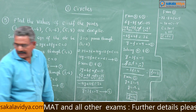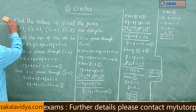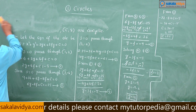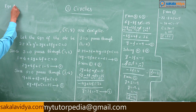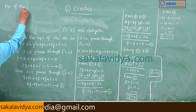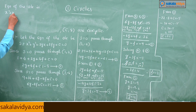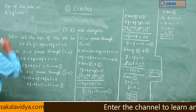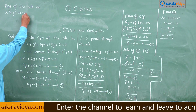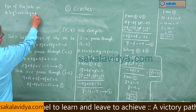The equation of the circle is x² + y² − 22x − 4y + 25 = 0.